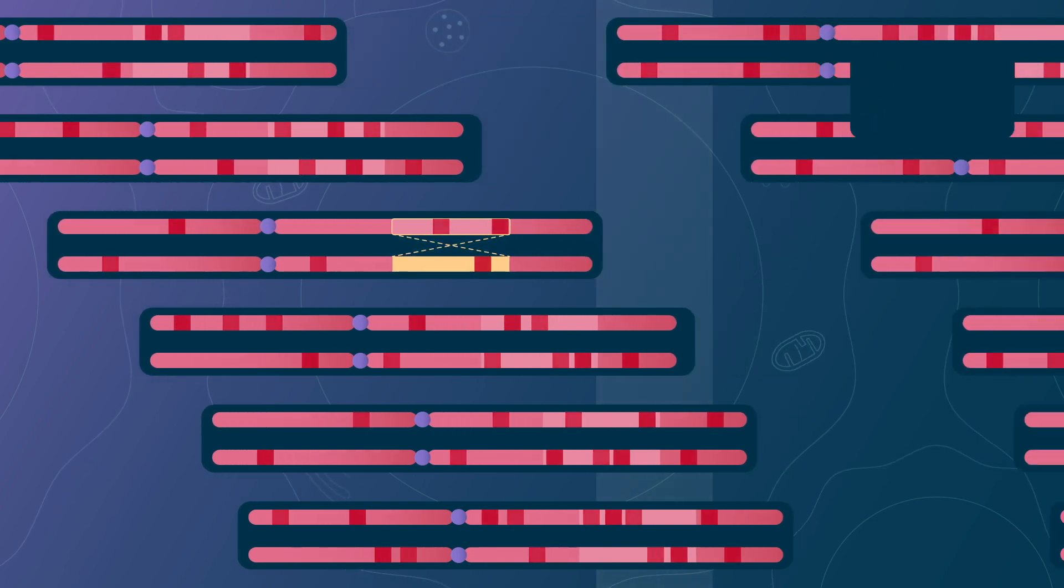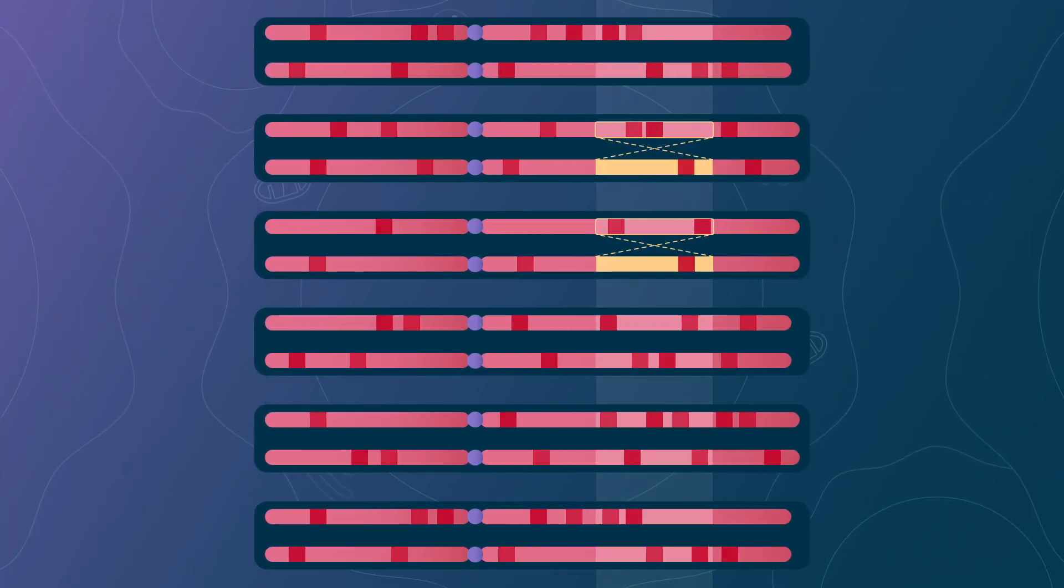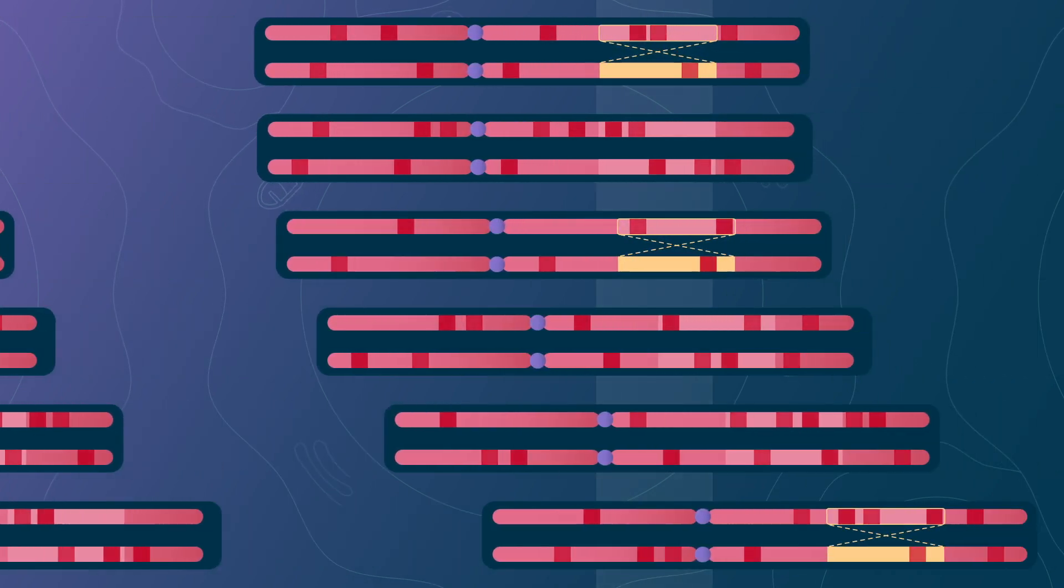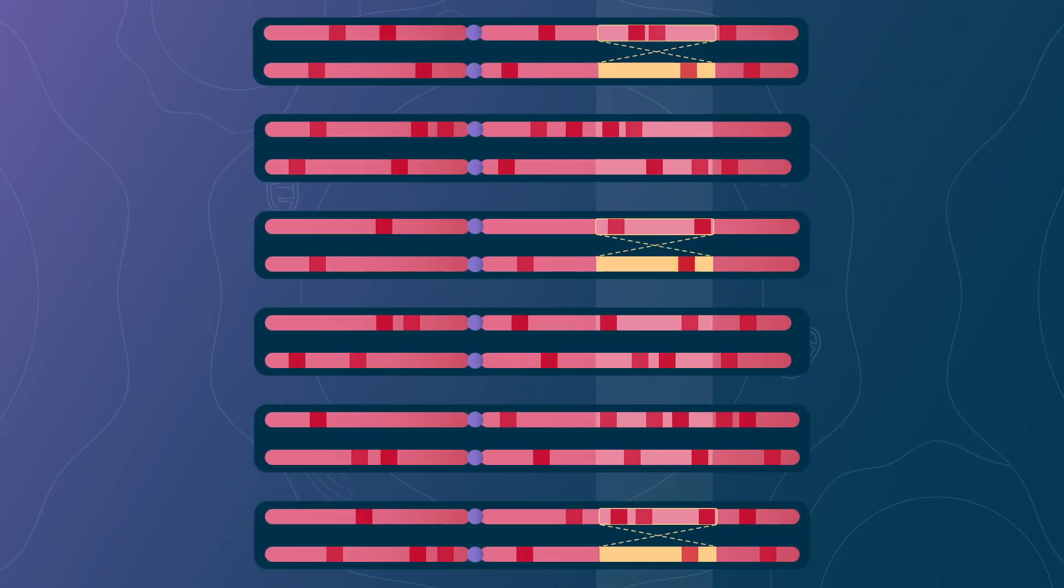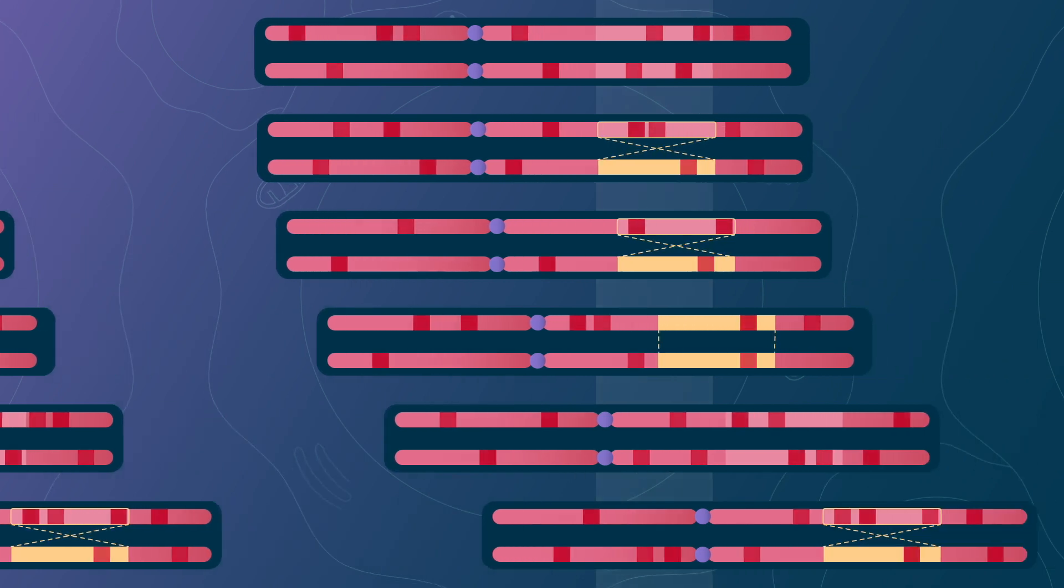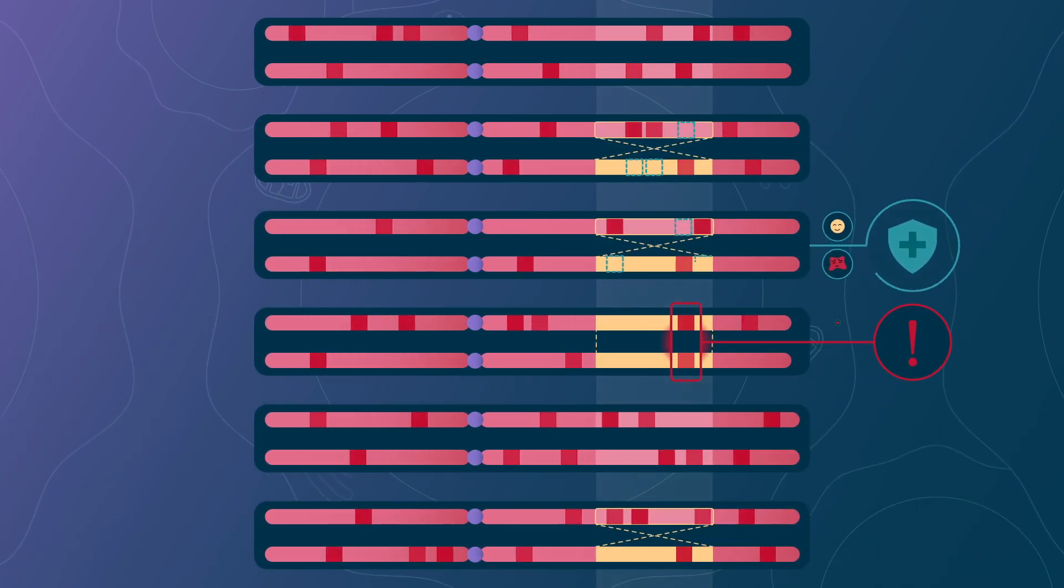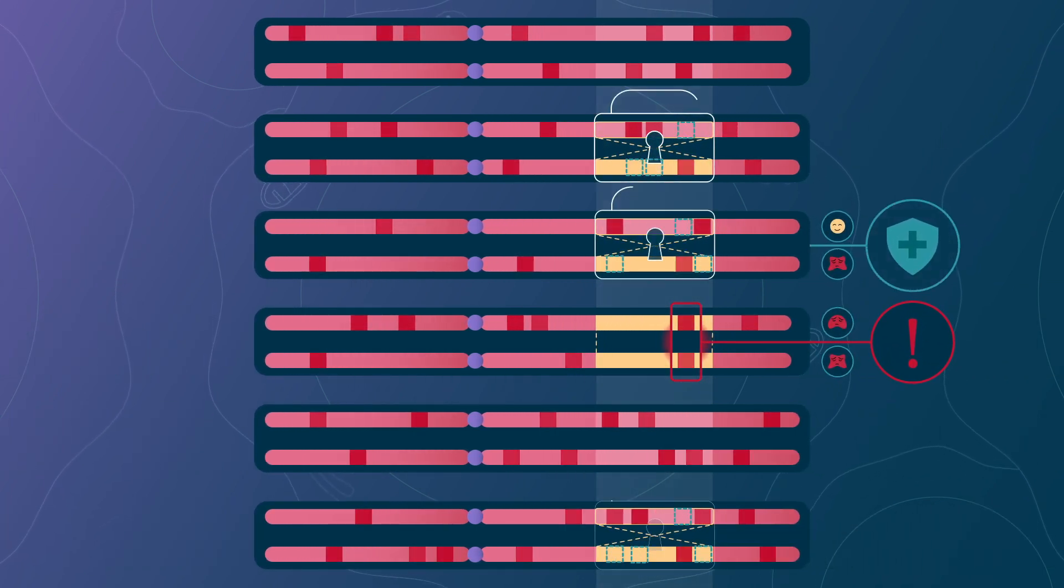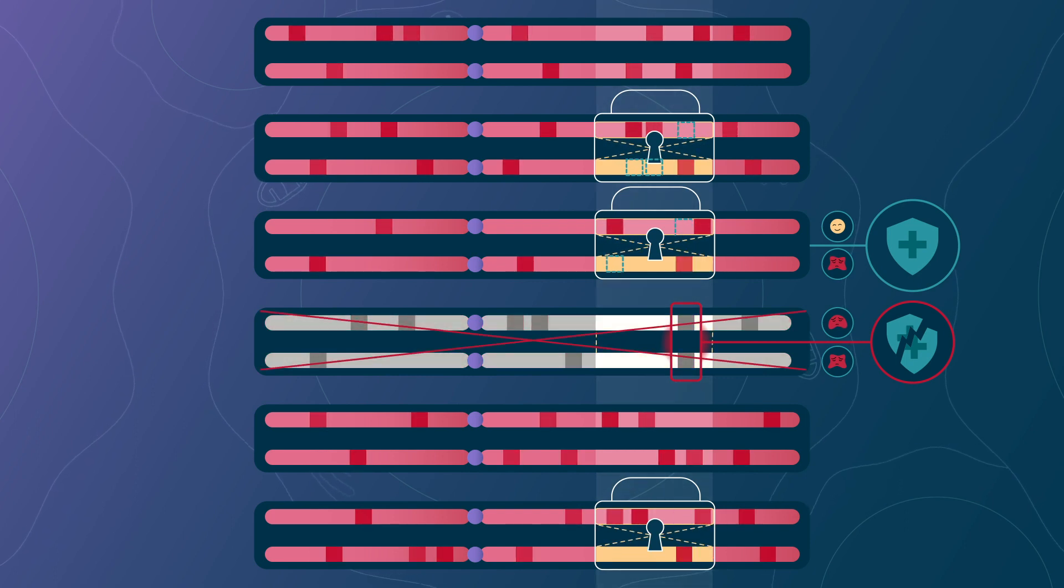Therefore, there will be more and more individuals carrying the inversion generation after generation. However, when it becomes frequent, such an inversion will often be present on the two homologous chromosomes in the same individual. The non-functional gene will not be sheltered anymore by a functional gene. Such individuals with two deleterious copies and no functional one will die young, and this will stop the increase in frequency of the chromosomal inversion.